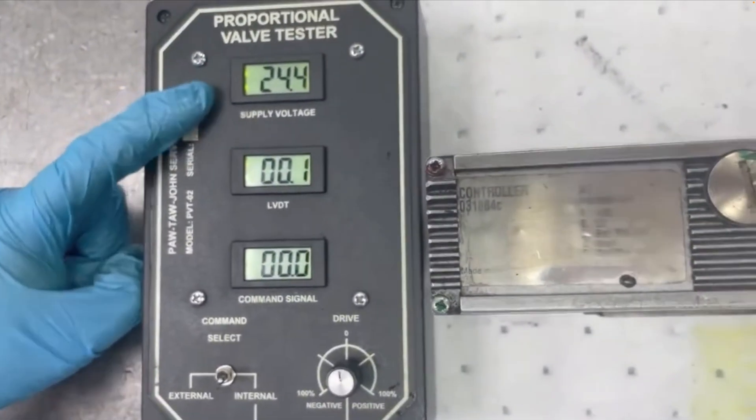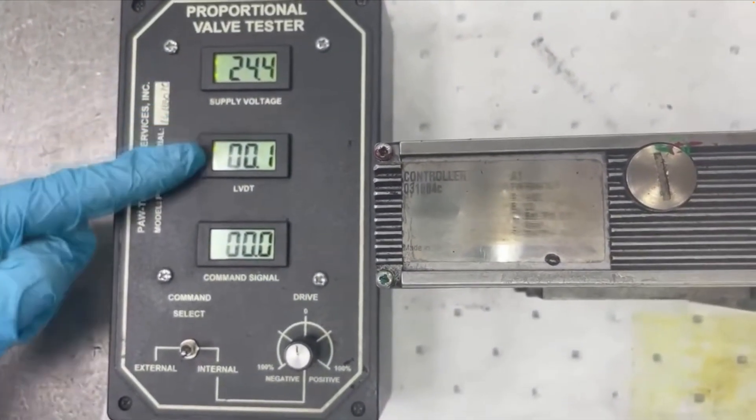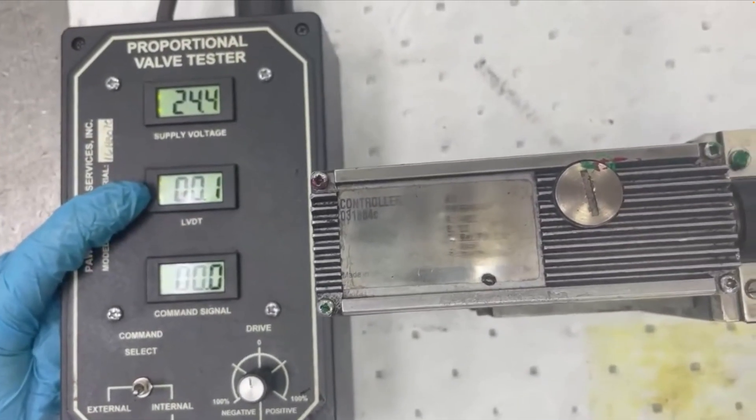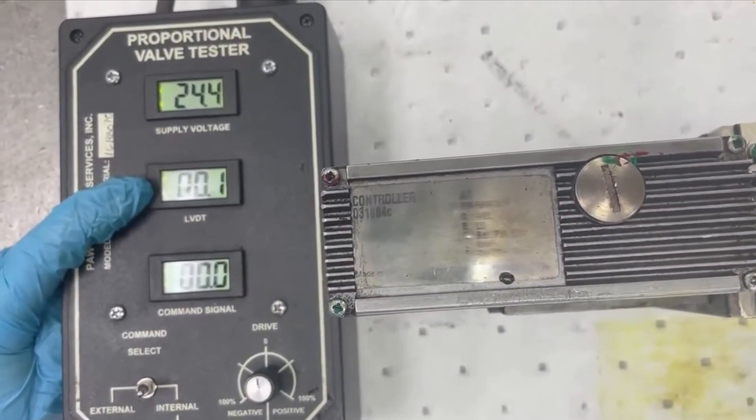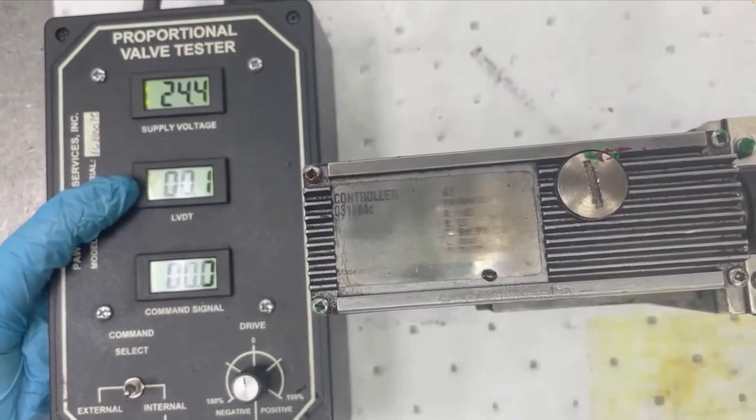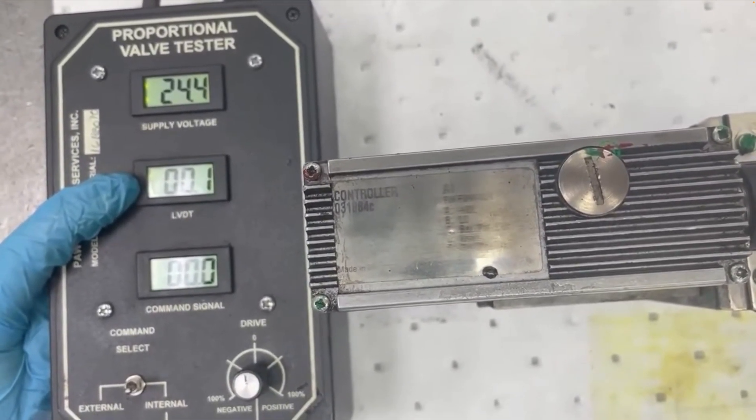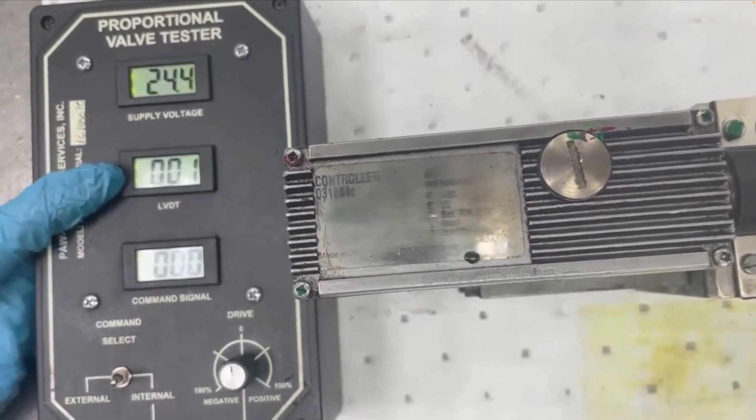We'll point out a couple of things. We've got a supply voltage here, 24 volts. We've got our LVDT, which is a linear variable differential transformer. There is a transducer inside the valve that is used to measure displacement, so position in this case for the valve, and then there is our command signal.